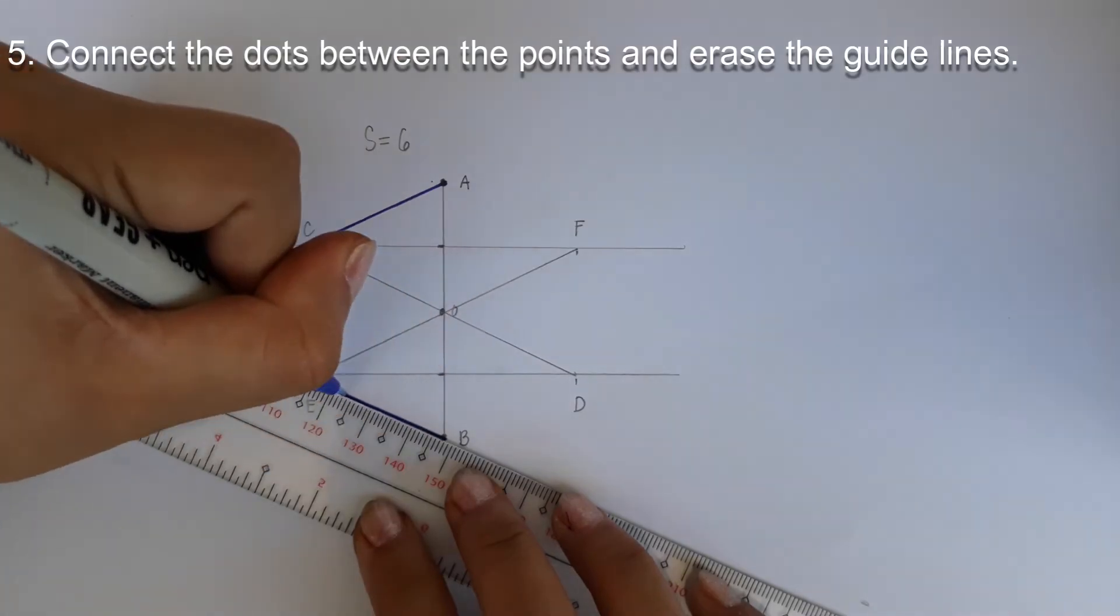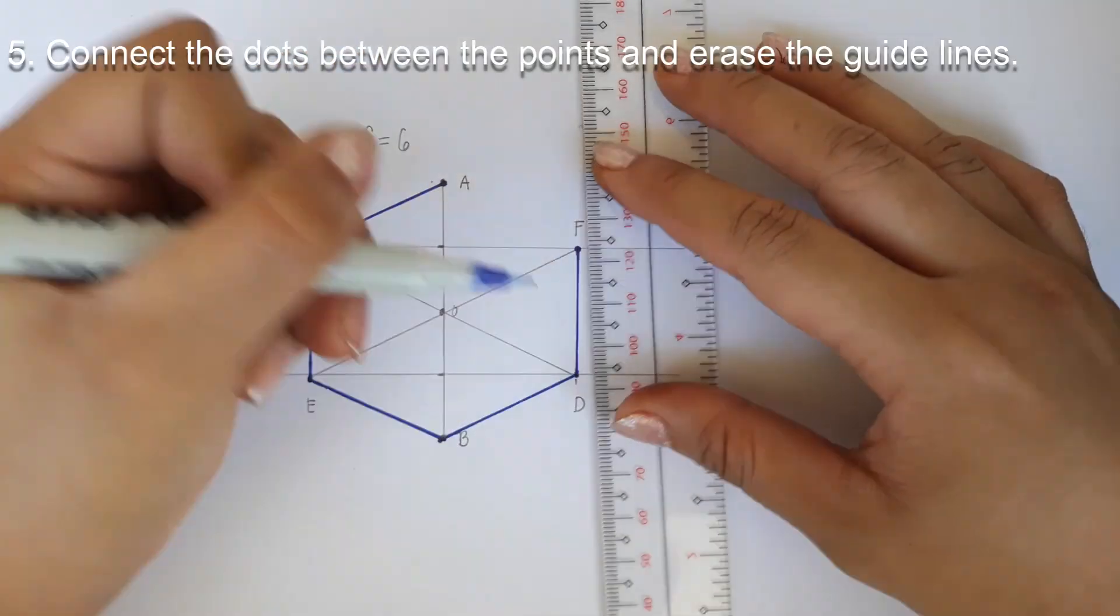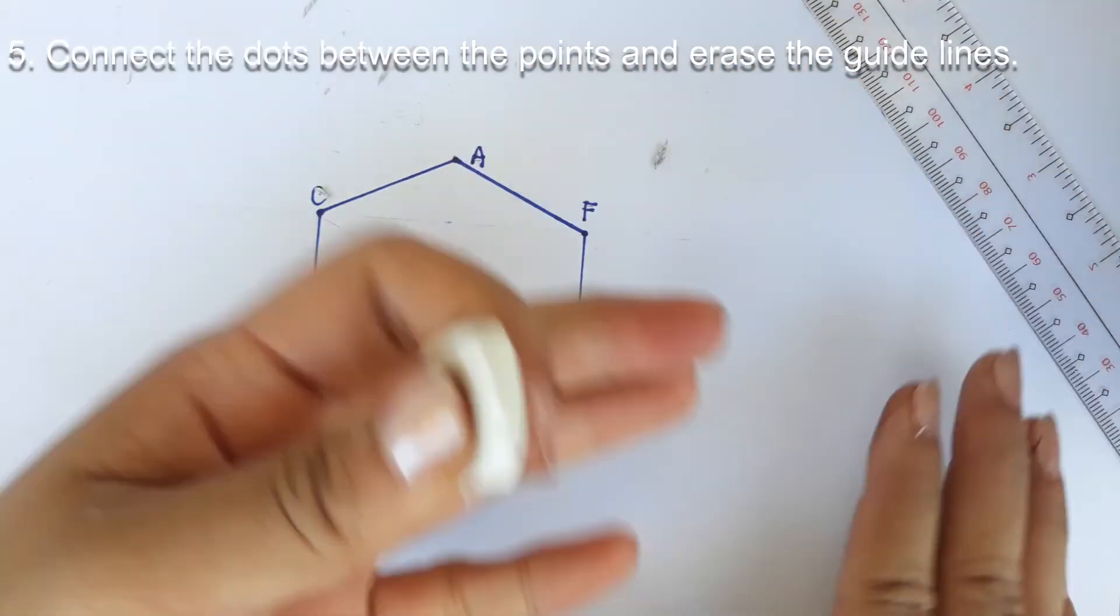And lastly, number 5. Connect the dots between the points and erase the guidelines.